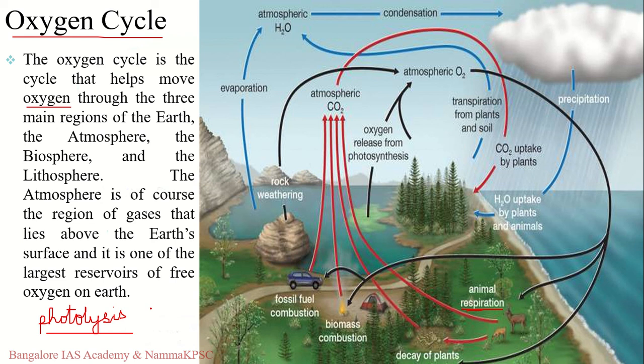One other way oxygen may get trapped is through the lithosphere, which can take in oxygen from the atmosphere through chemical weathering and other surface reactions, where oxygen may get trapped for a considerable period of time. These are the various aspects involved in the oxygen cycle.